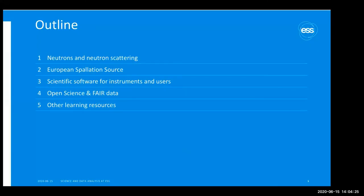For this presentation, I will give a brief introduction to neutrons and neutron scattering. I'll talk about the European Spallation Source, and then discuss scientific software for instruments and users. I would also like to discuss open science and FAIR data, as I believe this will have a huge impact on how science will be performed in the future. Finally, I'll give some links to other resources.